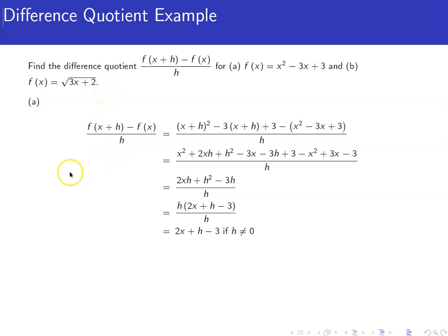Remember that this is function notation. This does not mean take f of x and add h. This means take out the x and replace it with x plus h. So we have x squared minus 3x plus 3. We're going to take out the x and put in x plus h. So that gives us x plus h quantity squared minus 3 times the quantity x plus h plus 3. That's the f of x plus h piece.